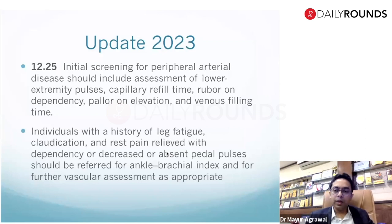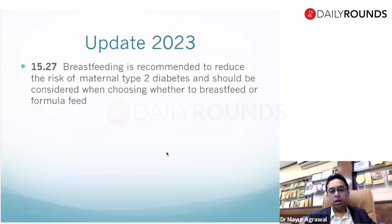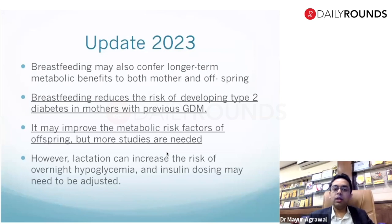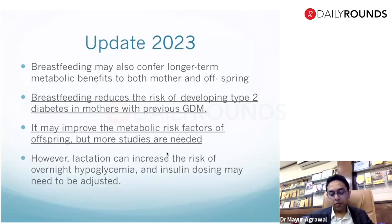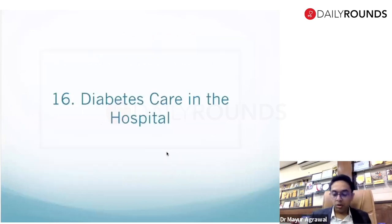Section 15 — management of diabetes in pregnancy. One important change: breastfeeding is now recommended to reduce the risk of type 2 diabetes. Two new points added: breastfeeding reduces the risk of developing type 2 diabetes in mothers with previous GDM, and it may improve metabolic risk factors in offspring. A note of caution: breastfeeding can increase hypoglycemia risk, and insulin doses should be adjusted accordingly.